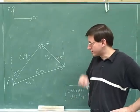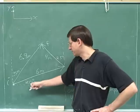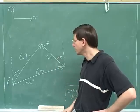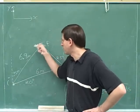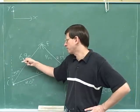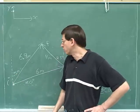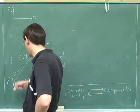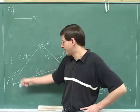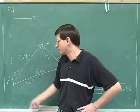So this kind of summarizes what we've done in this problem. Originally, somebody walked 6 meters at an angle of 20 degrees above the horizontal, and then 4 meters at an angle of 25 degrees to the left of the vertical, and I asked you to find the overall displacement vector. We found that the overall displacement vector is 6.9 meters in length, pointing 34 degrees to the right of the vertical — or equivalently, 56 degrees above the horizontal.